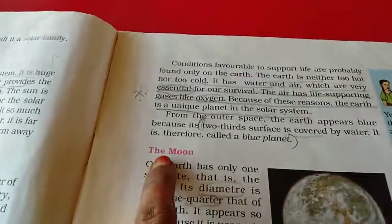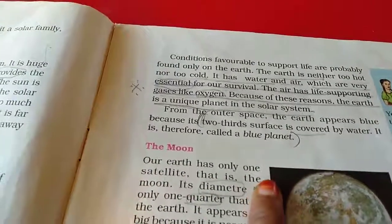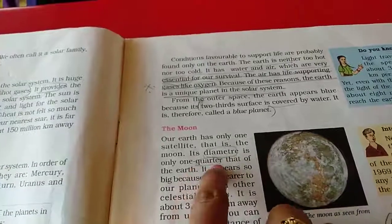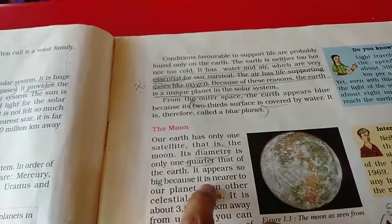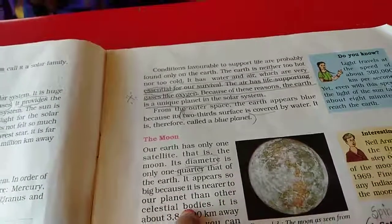The moon. Our earth has only one satellite. That is, the moon. Its diameter is only one quarter. That of the earth. It appears so big because it is nearer to our planet than other celestial bodies.